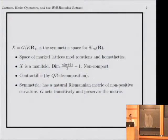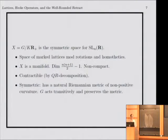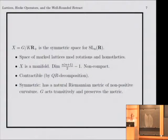Question: what is the exact operation combining K and R+? It's just matrix multiplication. R+ is the center, so R+ commutes with everything — R+ is scalar times the identity. So geometrically, imagine a lattice with a marking, mod rotations and homotheties.